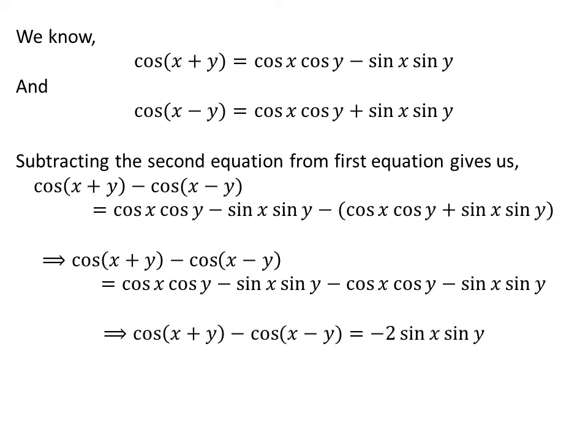Straightforward simplification gives us cosine of x plus y minus cosine of x minus y is equal to minus 2 times sine of x times sine of y.